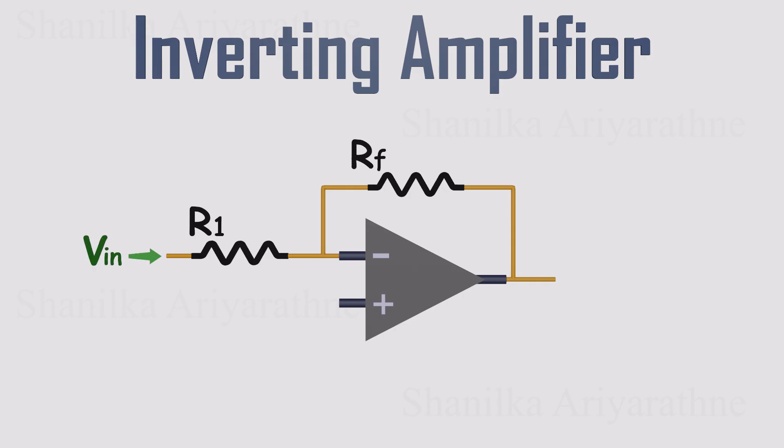Then, Rf links the output back to that input, forming the closed loop. In this configuration, the non-inverting input is used as a reference point, so we connect it to ground. That way, the input signal flows through R1 into the inverting input, and we get our output at the other side.